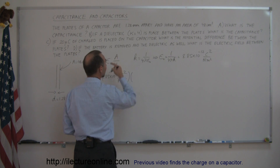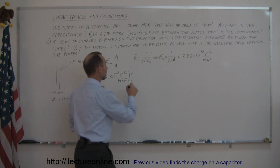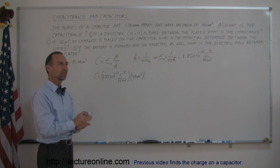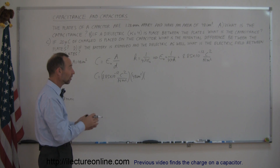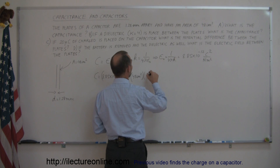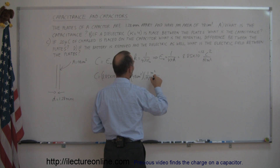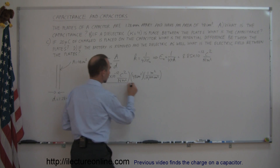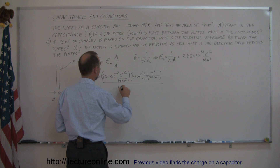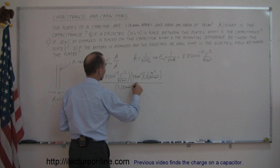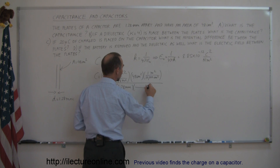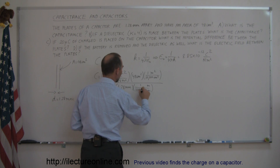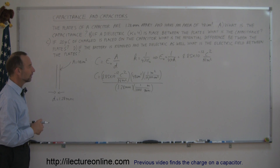We multiply by the area. The area is given in square centimeters — 48 centimeters squared — so we must convert to meters squared. There are 100 centimeters in a meter, therefore 10,000 square centimeters in a square meter, so we multiply by 1 square meter divided by 10,000 square centimeters. The distance between the plates is 1.28 millimeters, and since 1 meter equals 1,000 millimeters, we convert accordingly. Now we're ready to calculate.